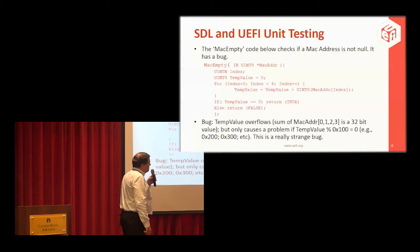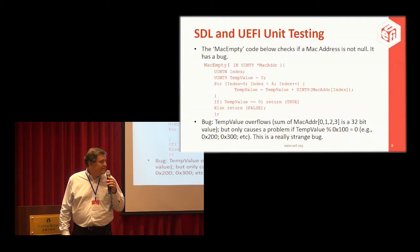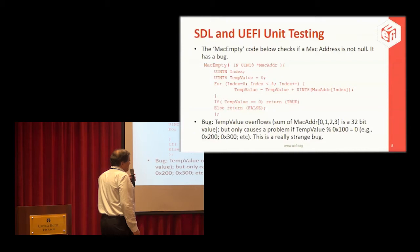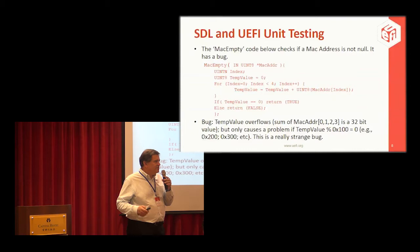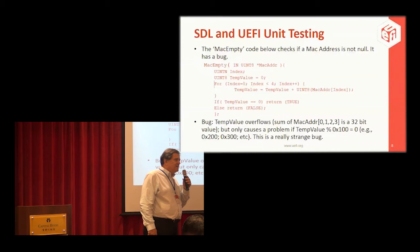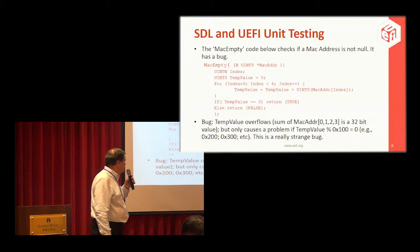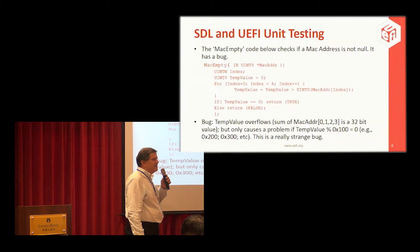There are more clever ways to write this code too. The problem occurs when the temp value overflows, and if it overflows perfectly so that the result is also zero — for example, an even increment of 0x100, 0x200, etc. — it gets the wrong answer. It says the MAC array is empty when it actually has data in it. It's a really strange bug: feed it all kinds of data and it gets the right answer, but just one set of data and it gets it wrong.